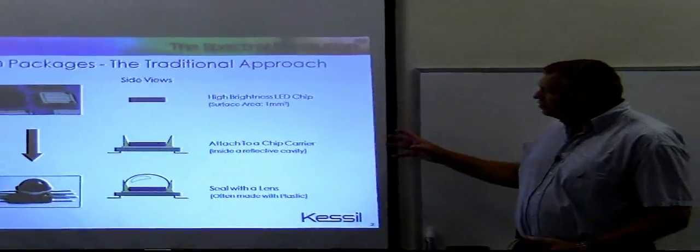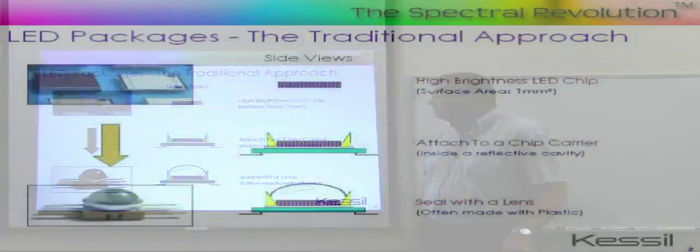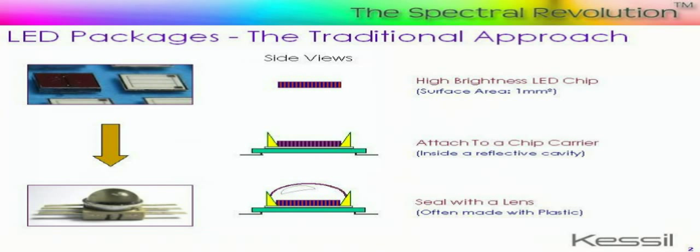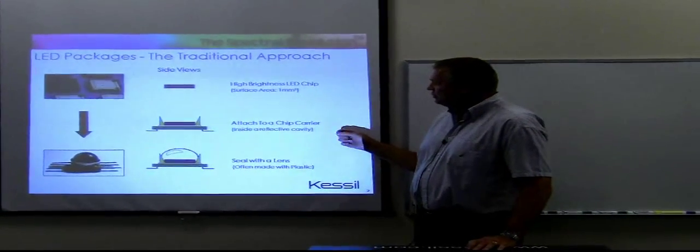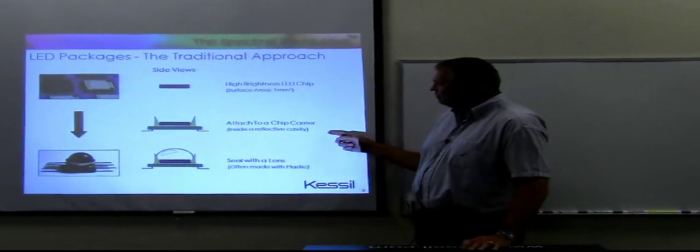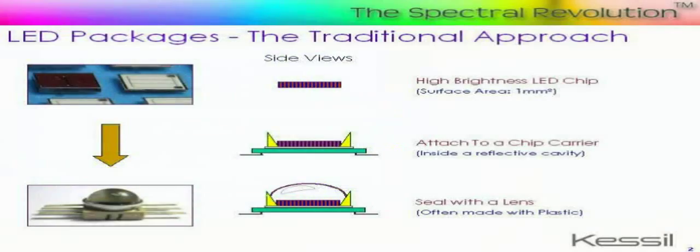This slide shows the traditional approach to packaging LED chips. The normal practice is high brightness LED chips, which tend to have a surface area of about one millimeter on a side, are individually placed in chip carriers, typically inside a small reflective cavity or reflective cup.